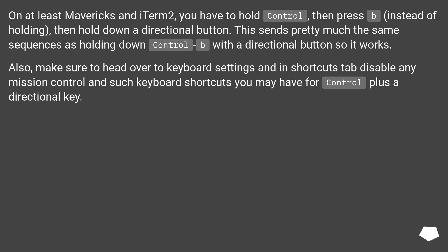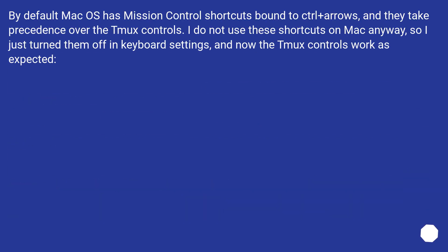Also, make sure to head over to Keyboard Settings and in the Shortcuts tab, disable any Mission Control keyboard shortcuts you may have for Control plus a directional key. By default, Mac OS has Mission Control shortcuts bound to Control+Arrows, and they take precedence over the Tmux controls. I just turned them off in Keyboard Settings, and now the Tmux controls work as expected.